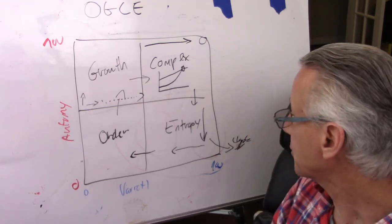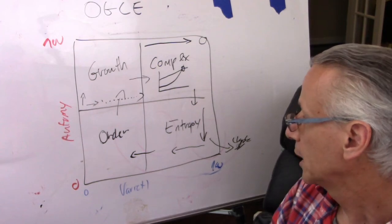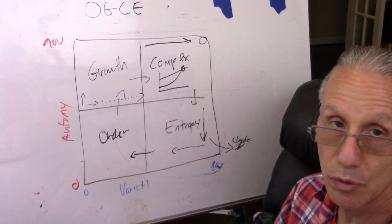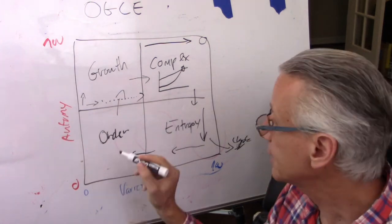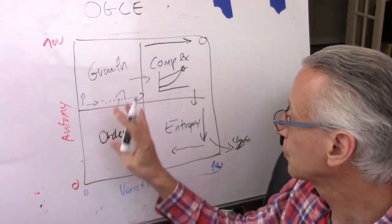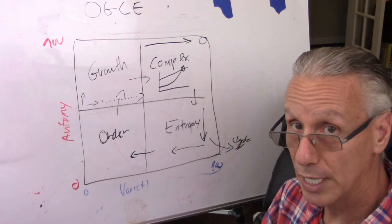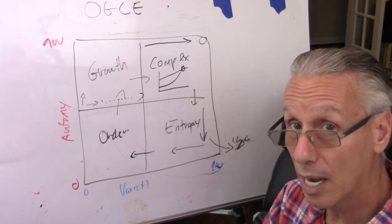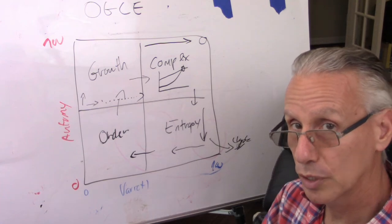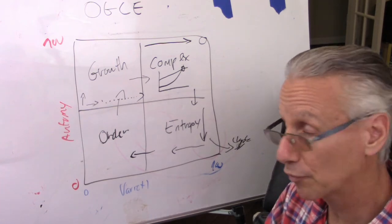So, that's the model in a nutshell. Very simple, very straightforward. If you know the level of variety and the level of autonomy, you can pretty easily define where you are. Are you more in order, growth, complexity, entropy? If your stage is slightly different than your competitors or your customers, then obviously you have a problem and you need to take care of it.